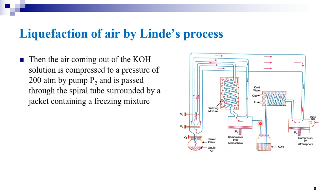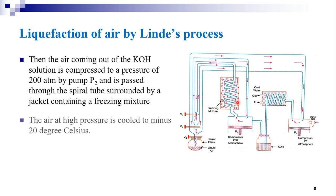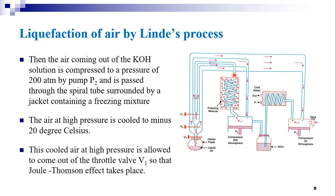The air coming out of the KOH solution is again compressed to a pressure of 200 atmospheres by the compressor pump P2, and is passed through the spiral tube surrounded by a jacket containing a freezing mixture. The air at high pressure is cooled to minus 20 degrees Celsius with the help of the freezing mixture surrounding the spiral tube. This cooled high-pressure air is then allowed to come out of the throttle valve V1, so that the Joule-Thompson effect takes place.